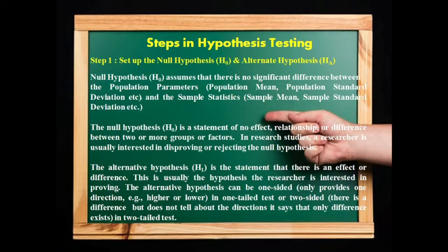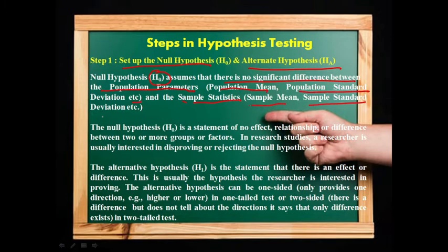Step 1: Set up the null hypothesis and alternate hypothesis. The null hypothesis is represented by the H0 sign. It assumes that there is no significant difference between the population parameters — population mean, population standard deviation, etc. — and the sample statistics such as sample mean and sample standard deviation. The null hypothesis represents the 'no' word; it is a statement of no effect, no relationship, or difference between two or more groups or factors.